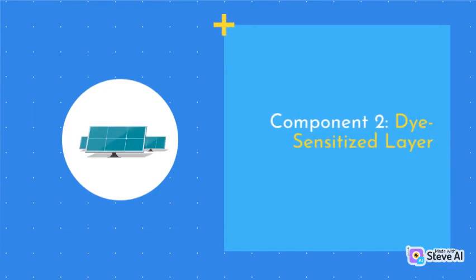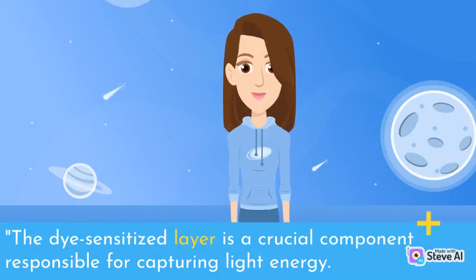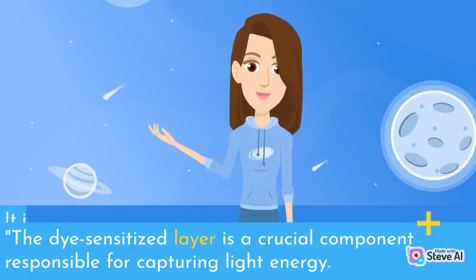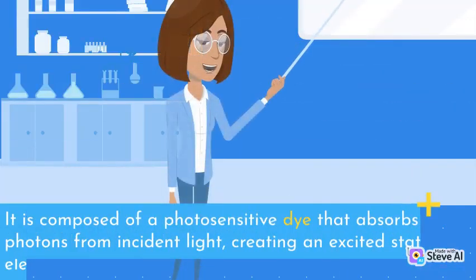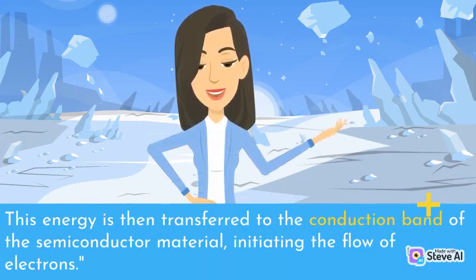Component 2: Dye-Sensitized Layer. The dye-sensitized layer is a crucial component responsible for capturing light energy. It is composed of a photosensitive dye that absorbs photons from incident light, creating an excited state. This energy is then transferred to the conduction band of the semiconductor material, initiating the flow of electrons.